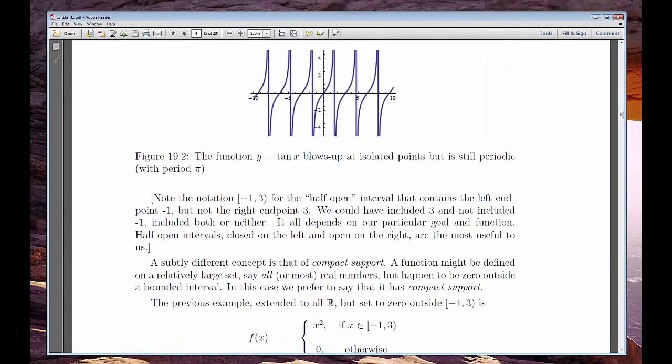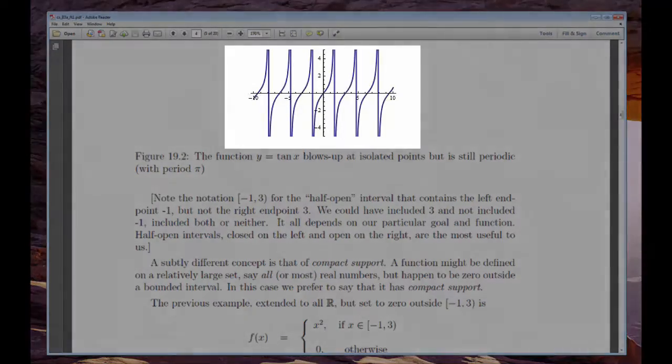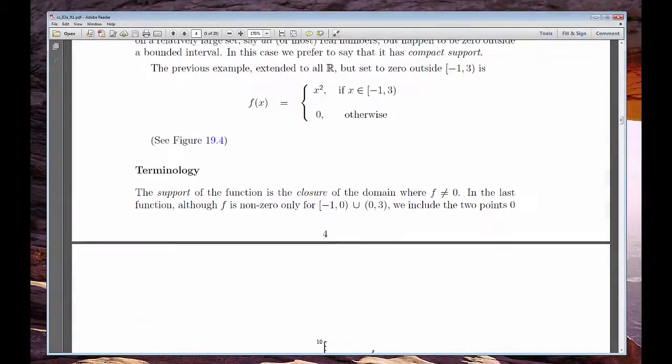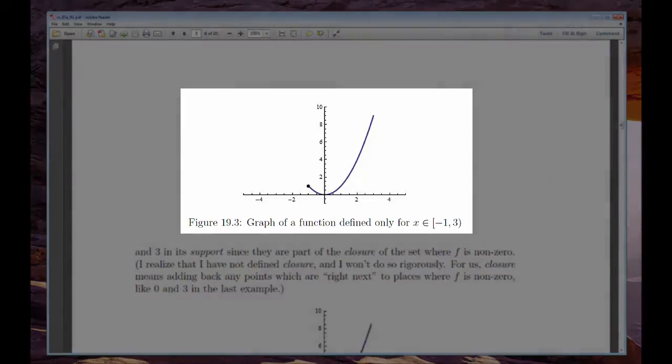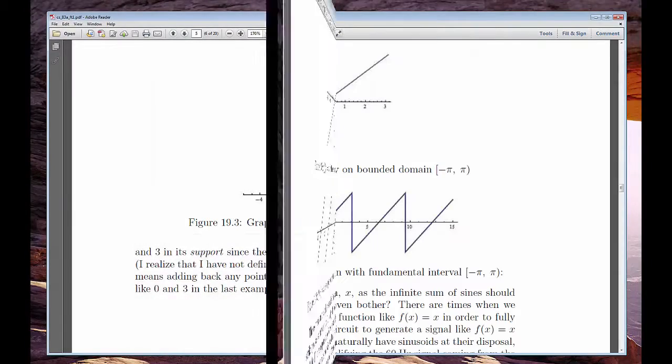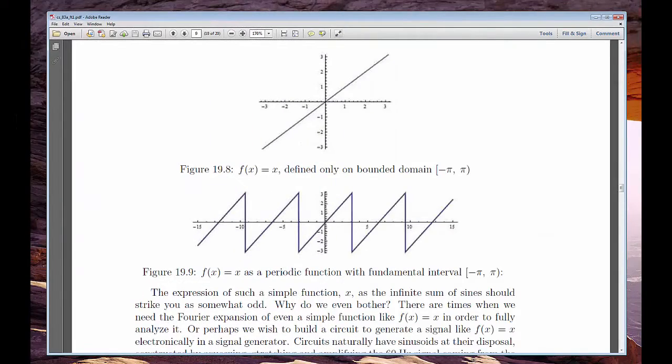Fourier series only work with periodic functions like tan x or functions that have a compact domain, like x squared defined only between minus one and one. So we'll review or define those categories first.